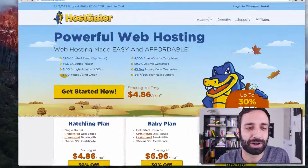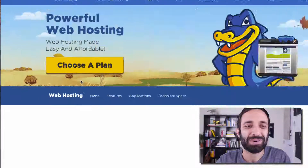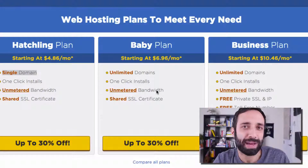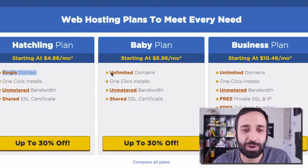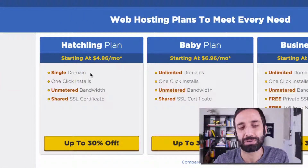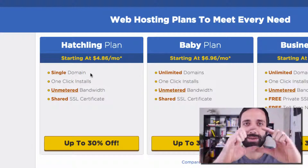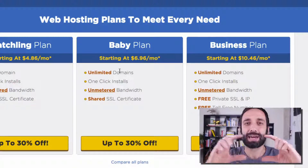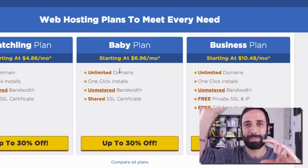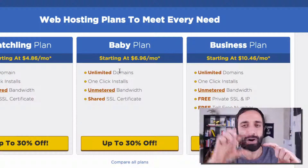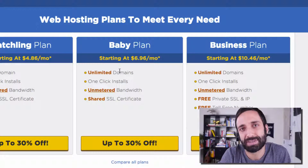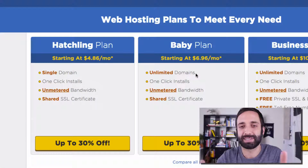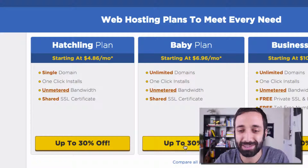To get started with Hostgator, click the button that says 'Get Started.' Once we do that we're going to choose a plan. When you sign up for hosting there's a variety of plans. I like to go with the Baby plan — not only because it's adorable but because you get unlimited domains, which is pretty sweet, versus the Hatchling plan which only has a single domain. So if I hook up a site and then later want to add my mom's site or a new blog or business, I can have all those domains point to this one hosting. It saves you a lot of money and organization. This is called a shared hosting plan.